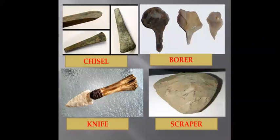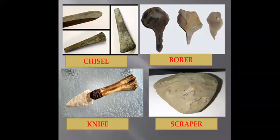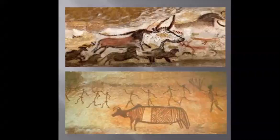Homo sapiens made significant progress in gaining knowledge of his environment and in the technique of making tools and obtaining food. This enabled him to stay in one place for a longer period of time, and groups of Homo sapiens began to build huts and live in them. They also started celebrating social festivals, and many artistic objects and cave paintings were created by them. Homo sapiens slowly started using ornaments; beads from this period were made from shells and bones.